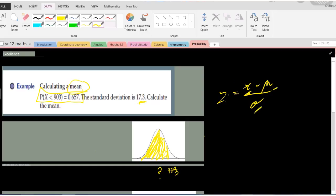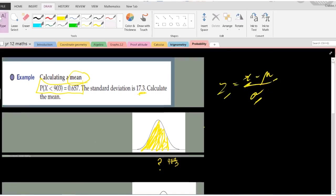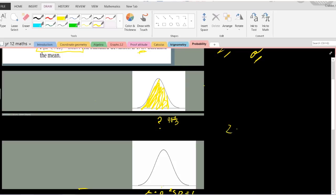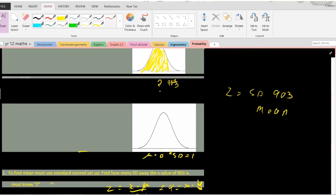We need to find z. Z is basically the number of standard deviations that 903 is away from the mean. It's the distance away from the mean, and we need that z value.